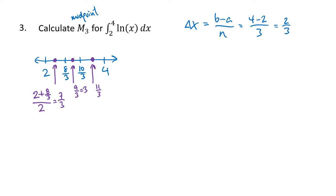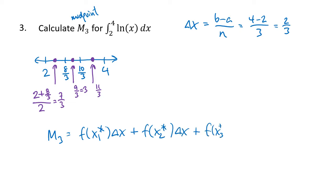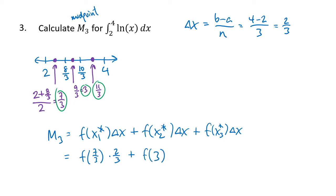Those midpoints — 7/3, 3, and 11/3 — are our xi* values. So M3 = f(7/3)·(2/3) + f(9/3)·(2/3) + f(11/3)·(2/3). Plugging into the function f(x) = ln(x) and adding it all together, we end up with our value of M3 ≈ 2.163.